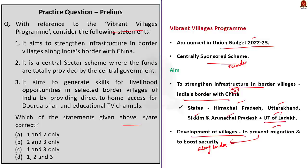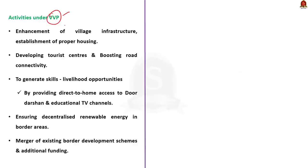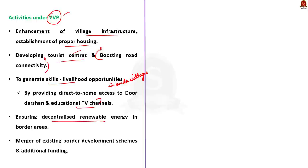The primary activities under the Vibrant Villages Program focus on enhancing village infrastructure, establishing proper housing, and developing tourist centers. The program also aims to boost road connectivity and generate skills for livelihood opportunities in border villages by providing direct-to-home access to Doordarshan and other educational television channels. In addition, it includes provisions to ensure decentralized renewable energy in such border villages. The program also aims to merge existing border development schemes with its own, with provisions for additional funding. These activities are critical to protect the country's sovereignty and to avoid any potential conflict with neighbors.